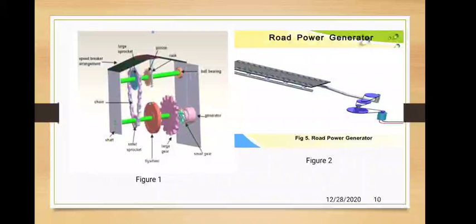In the left figure, you can see two different levels of shafts. The upper shaft has a rack and pinion mechanism. Once movement is generated on the pinion gear, it rotates the shaft, which generates movement at the large sprocket. This movement is transferred to the small sprocket on the lower-level shaft, and this small movement is increased in value using a flywheel mechanism. A large gear and a small gear are further connected to a DC generator.